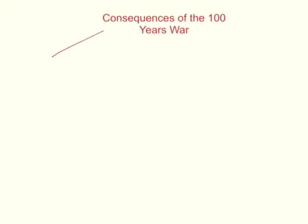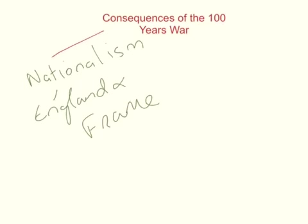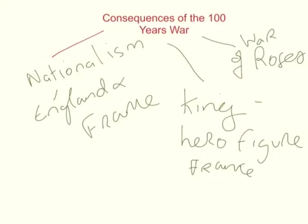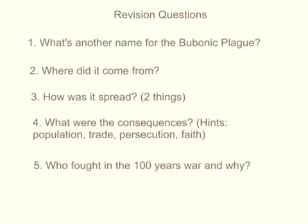The consequences of the 100 Years' War were: firstly, nationalism increased — people felt very patriotic and loyal to their country, both in England and France. Secondly, the king became a hero figure, especially in France because they won the war. In England, another civil war broke out for the throne called the War of the Roses, so England was not very settled. All in all, the three disasters of the Great Schism, the Bubonic Plague, and the 100 Years' War weakened Europe greatly. However, it ultimately strengthened the rule of the monarchs, the population increased, there was a shift from the feudal system to a king-based system, and the cities became the central focus once again.